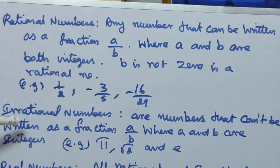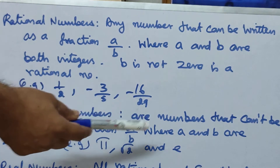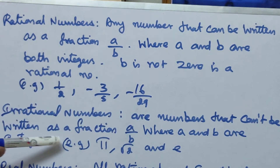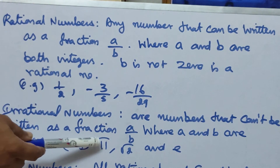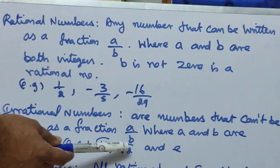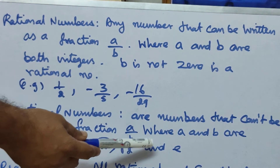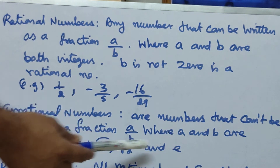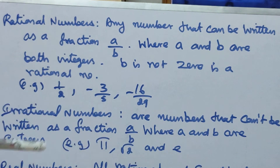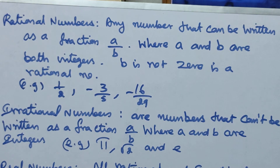Next, irrational numbers are numbers that can't be written as a fraction a divided by b, where a and b are integers. For example, pi, square root of 2, and e.